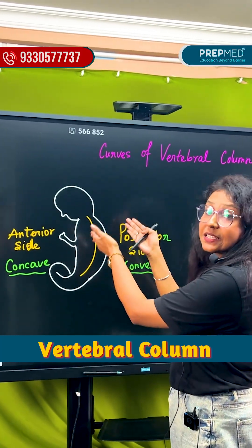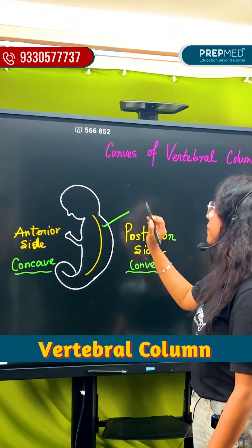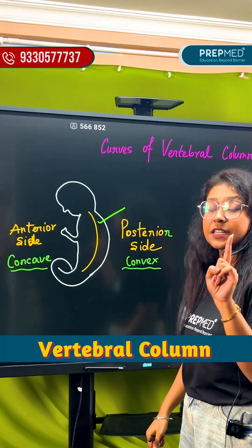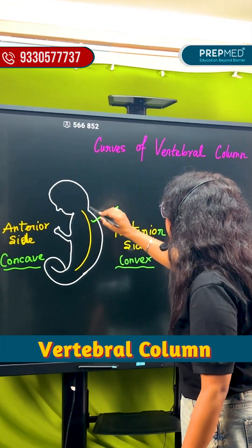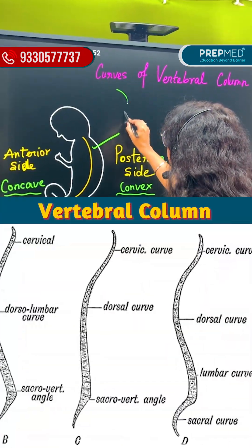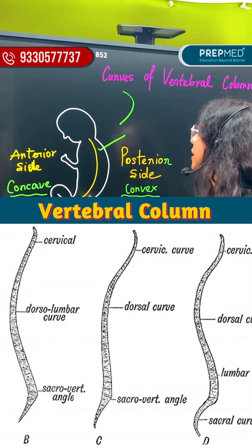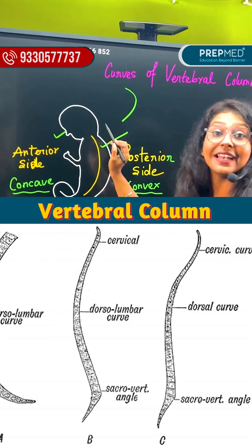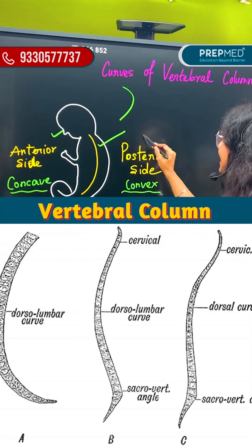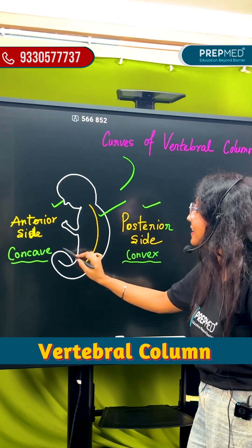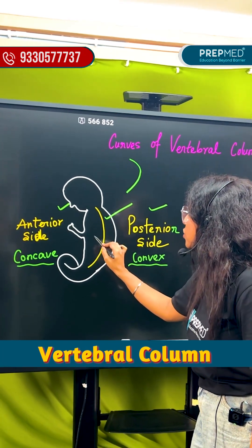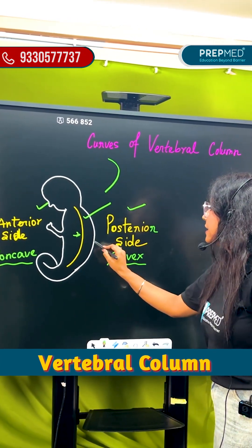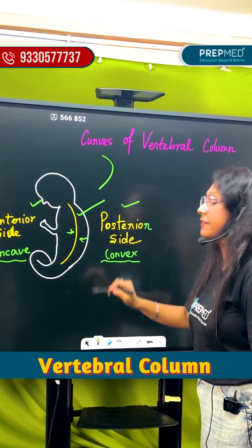This is the vertebral column of a fetus. In the fetal condition, you can see the C shape — that is on the anterior side. You can also see the posterior side, where the anterior side is concave and the posterior side is convex.